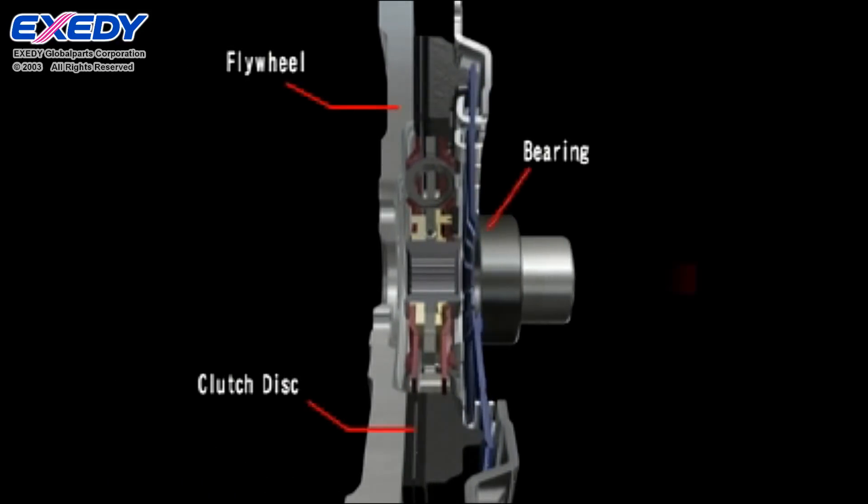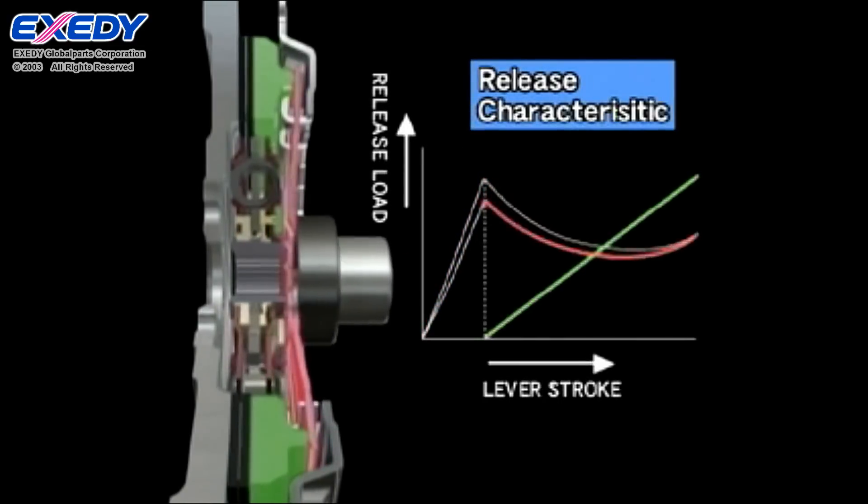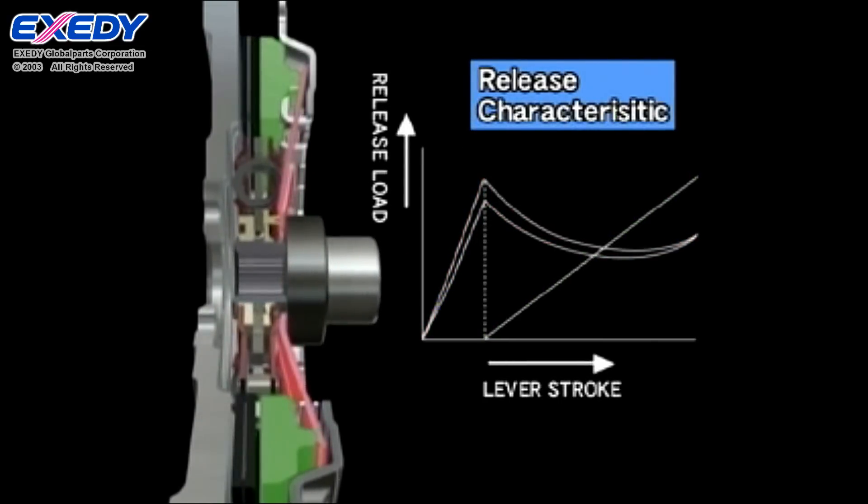The release load of the diaphragm spring and pressure plate travel when the clutch disc is disengaged is shown by this graph, which is called the release characteristic.